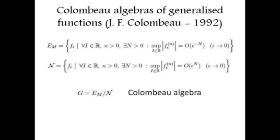N is an ideal of M, and therefore it is natural to define the quotient algebra G = M/N, which is the Colombeau algebra. We should note that for the theory to work, the mollifier should have all its moments equal to zero. Such functions do not strictly exist, but this can be fixed within the theory.